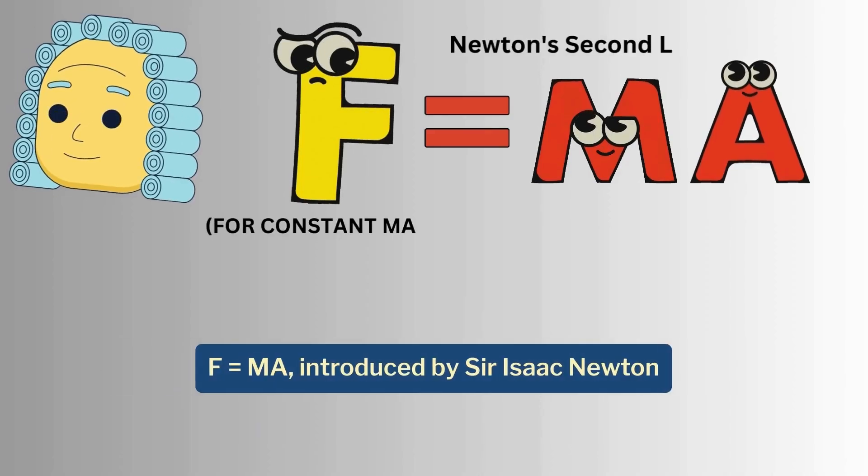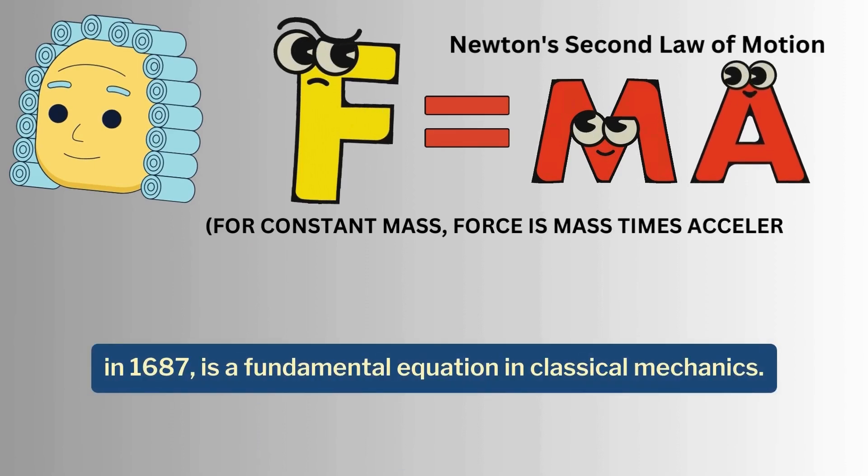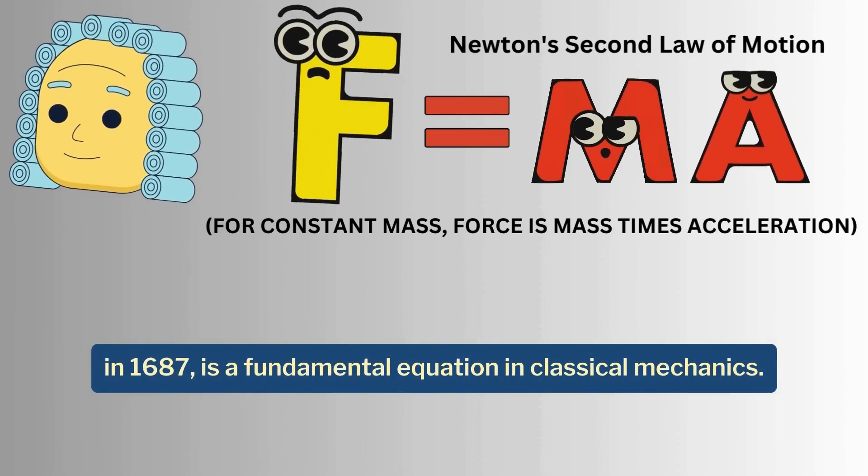Newton's second law of motion, F equals MA, introduced by Sir Isaac Newton in 1687, is a fundamental equation in classical mechanics.